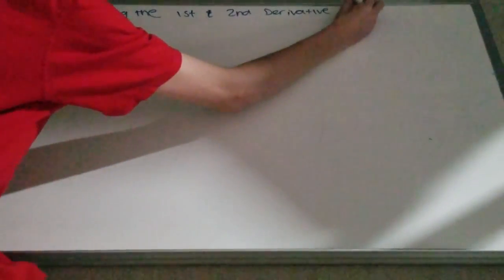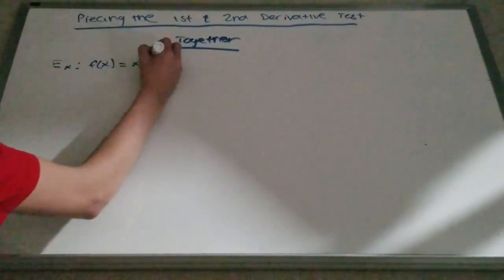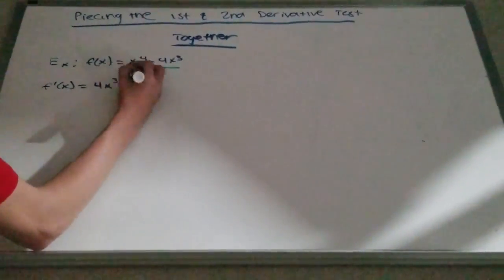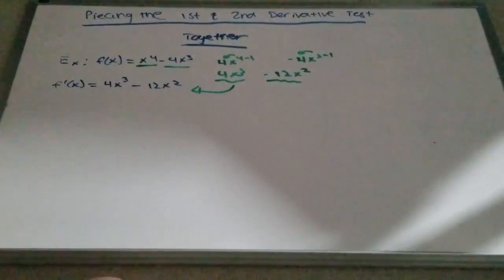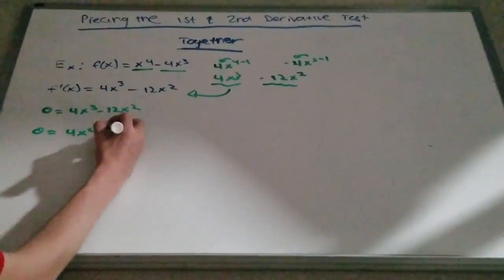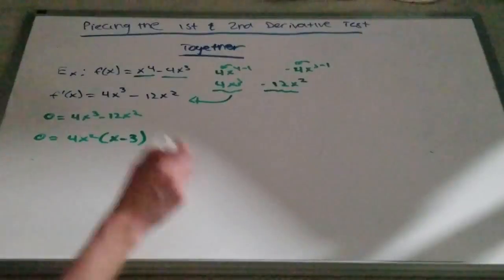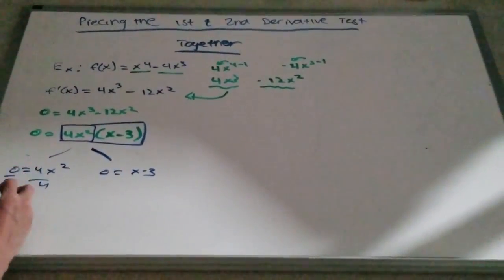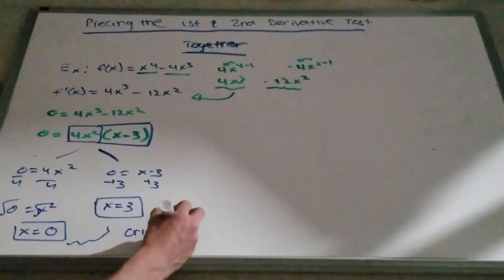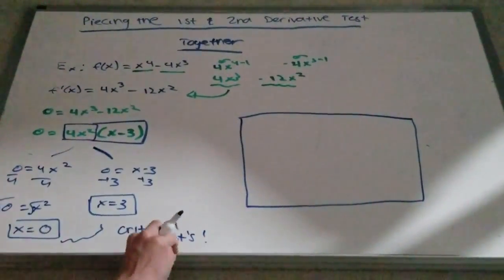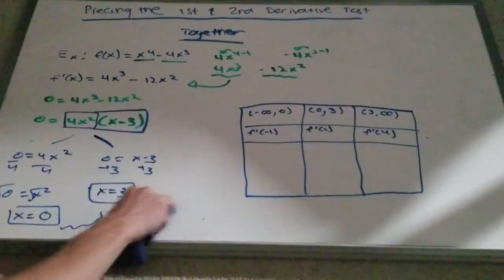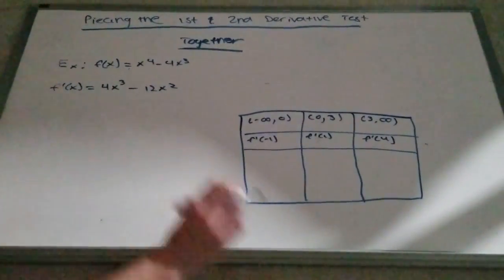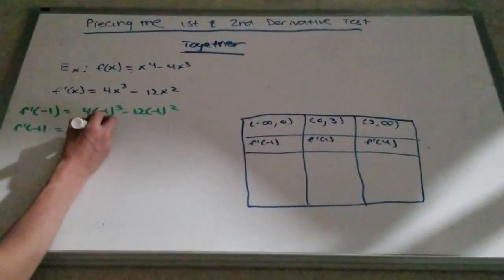Next, we are going to piece the first and second derivative tests together with a quick example. We're using f(x) = x⁴ - 4x³. The derivative is 4x³ - 12x². We set that equal to zero and find critical values by factoring into 4x² and (x - 3), giving x values of 0 and 3. We have three intervals: negative infinity to zero, zero to three, and three to infinity. We plug in test numbers from each interval into the derivative to determine whether each interval is increasing or decreasing.